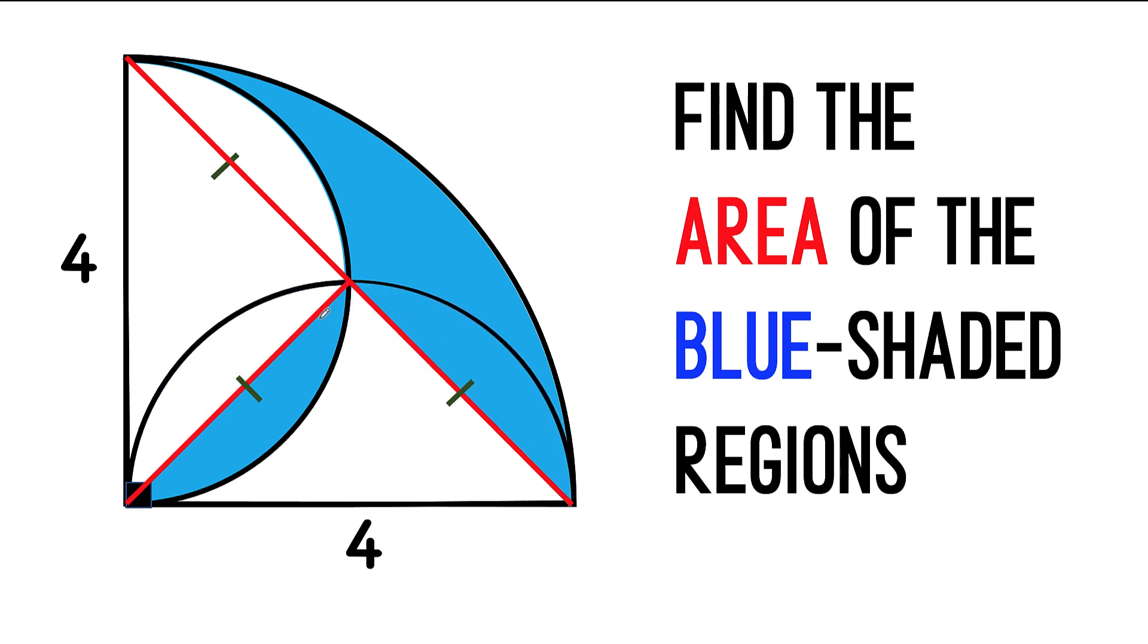Also, since this segment is equal to that segment, and these are arcs of the same semicircle, I can now transfer this blue shaded region to this part, and we have just shown that the blue shaded regions that we are after in this problem is just the area of the quarter circle minus the area of this right triangle.